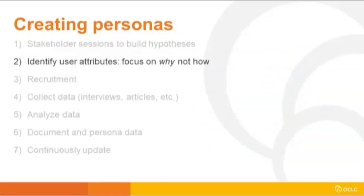Once you have all your stakeholders together, you want to start to identify user attributes - needs, motivations, pain points, and all those factors that you as a team said are important to know for building out that project or program. Then start looking at that and focusing on the why. In user research and research in general, we have this rule called the five whys - we want to get to the root cause of things. If you ask why approximately five times, you'll get down to the root cause.